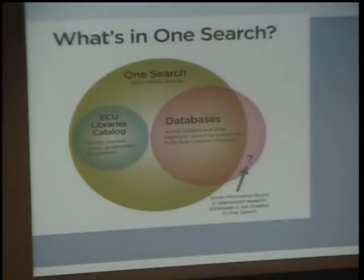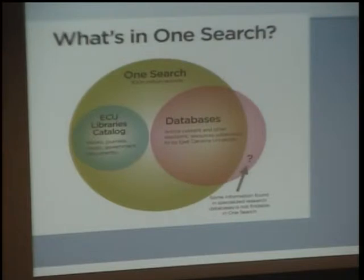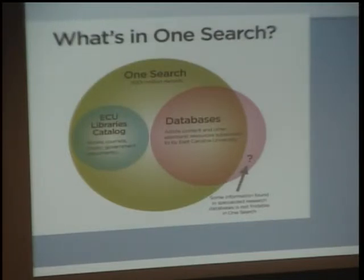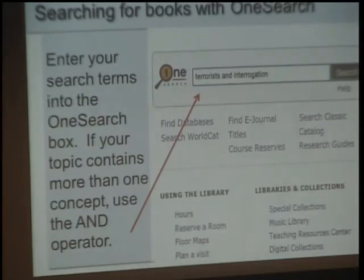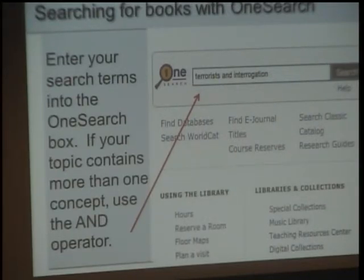In OneSearch are books — both print and electronic — from the ECU Libraries catalog, including both the Joyner and Law Office Health Sciences catalog, and in addition, many articles from our subject databases. However, at this time, not all articles from our specialized databases are included in OneSearch. So we are going to use it for books only, and then move into our specialized databases for articles. Until OneSearch becomes comprehensive, this is my best advice.